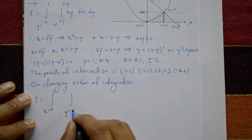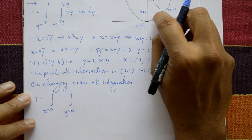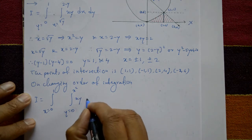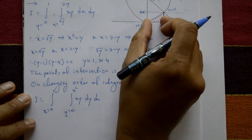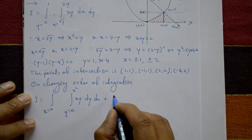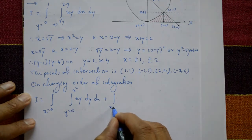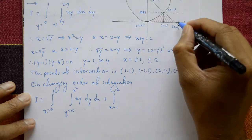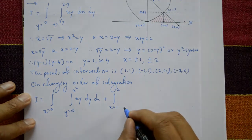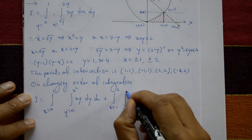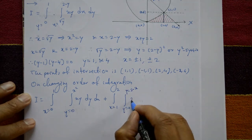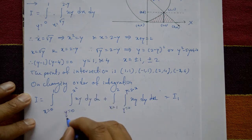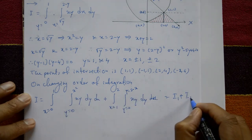First part: x goes from 0 to 1. The bottom curve is y = 0 (x-axis) and the top curve is x = √y, i.e., y = x². The function xy remains the same, giving ∫∫ xy dy dx. Second part: x goes from 1 to 2, and y goes from 0 to 2 − x (the straight line y = 2 − x). Function is xy dy dx. Call these I1 and I2.